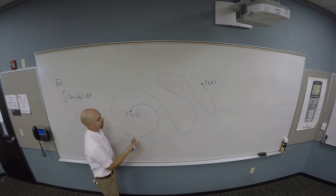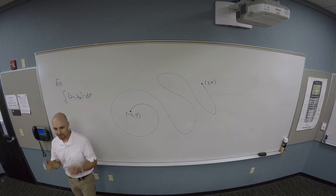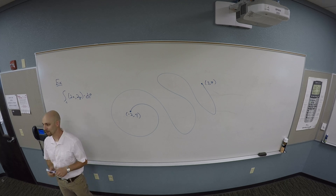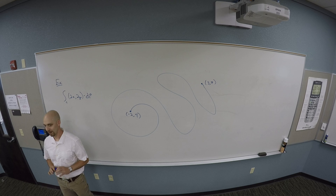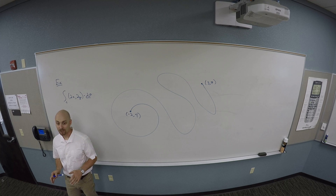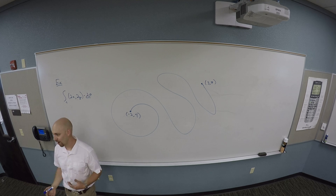This is the beauty of the fundamental theorem of line integrals — if you can get it to work, you don't need to parametrize anything. Which is why it's absolutely worth spending a second checking. So what are you going to check? How do I check whether the fundamental theorem of line integrals works for me or not?